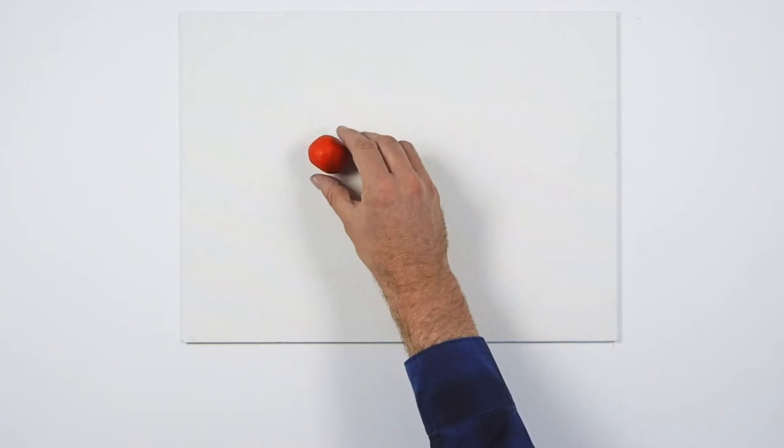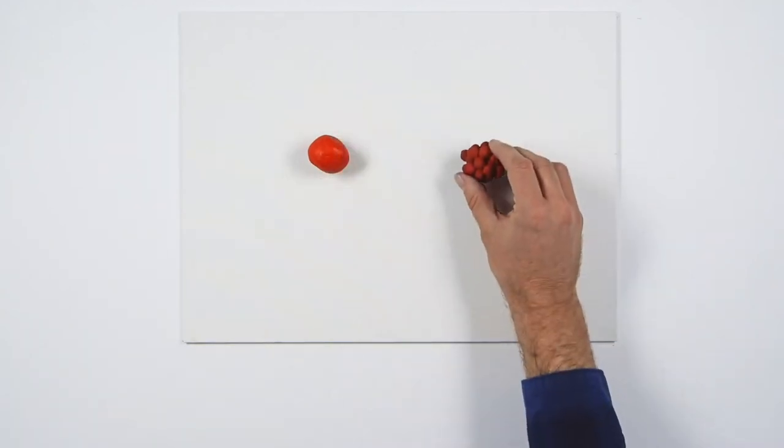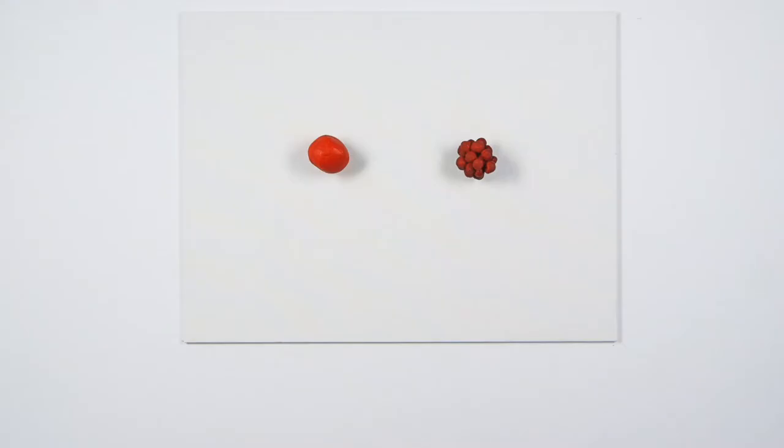A fat oil colour has a high oil absorption rate whereas a lean one has a low rate. So, what makes one pigment absorb more oil than another?